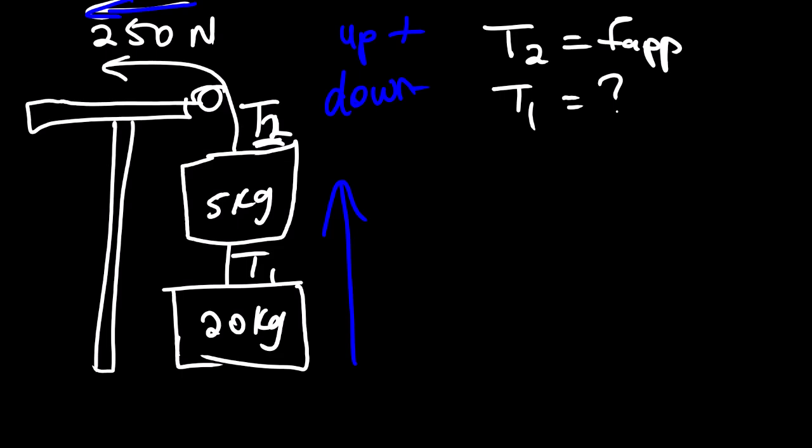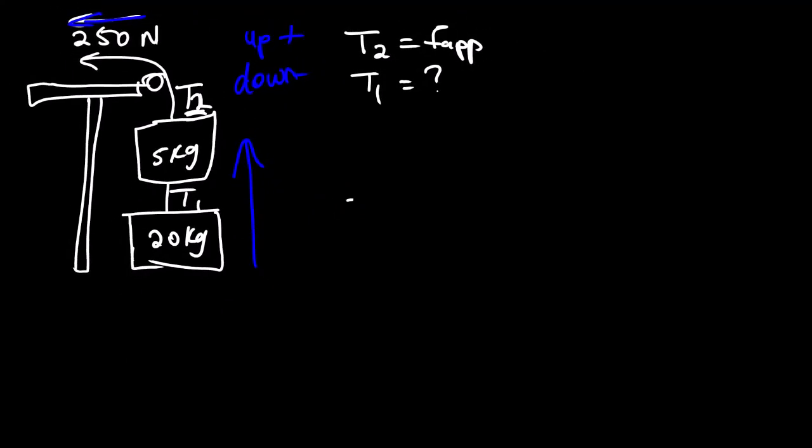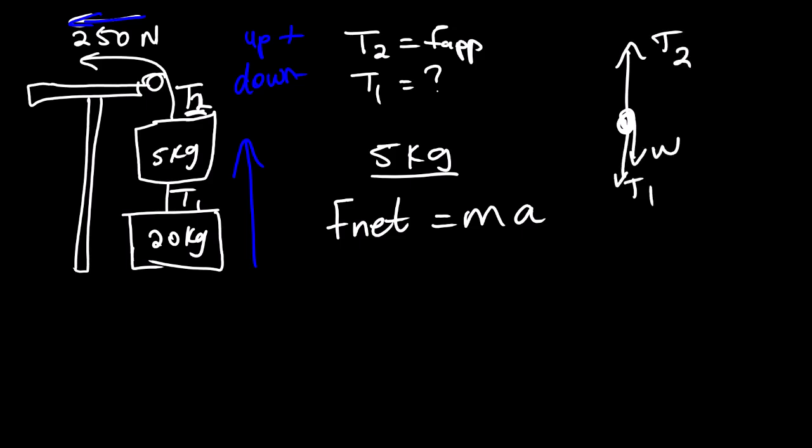We need to generate equations. So we have F net is equals to MA. We are focusing on the 5 kg block. How many forces are acting on 5 kg block? Remember our free body diagram has T2, T1, and weight. So we can see that we have 3 forces. How many forces are facing up? We have only one force, which is T2, so our T2 will be positive. Remember F net is the sum of all forces acting on the block. Then we have another force, which is T1, so it will be T1. Since it's facing down, it's negative. Plus we have another force, which is weight. It's equals to MA.